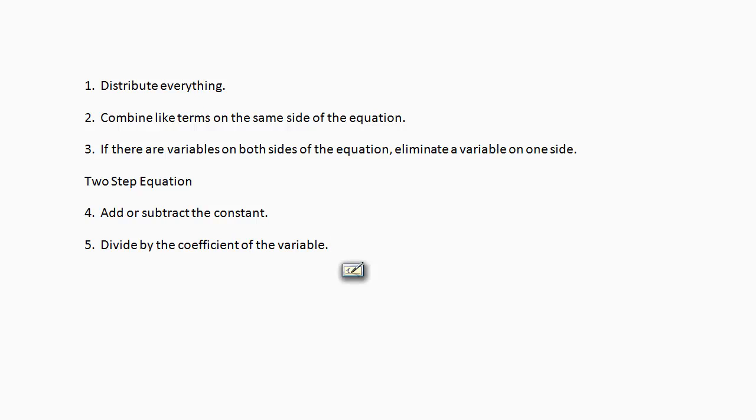The first step is, if there is something you can distribute, you want to distribute everything. The second step, if you have like terms on the same side of the equation, you want to combine the like terms that are on the same side of the equation.